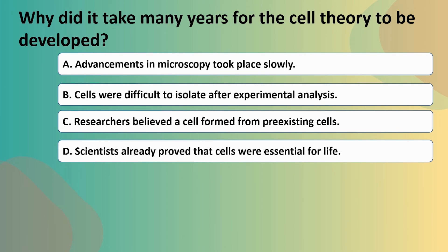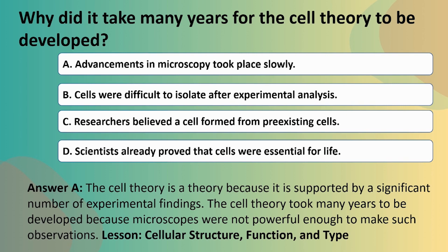Next question: why did it take many years for the cell theory to be developed? A: Advancements in microscopy took place slowly. B: Cells were difficult to isolate after experimental analysis. C: Researchers believed a cell formed from pre-existing cells. Or D: Scientists already proved that cells were essential for life. Recalling the three parts of cell theory — all living things are composed of one or more cells, cells represent the basic unit of life, and all cells are produced from pre-existing cells — option C is actually a component of cell theory itself. Remembering that Robert Hooke discovered the first cells in the mid-18th century, our answer is A: it took many years because microscopes were not powerful enough to make such observations.